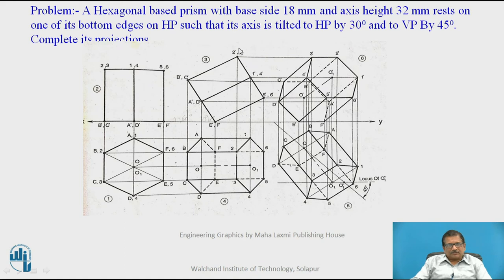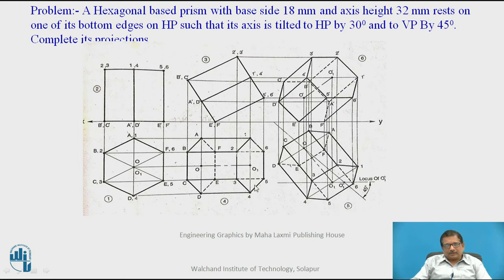Now for the top face: when we project points 1, 2, 3, 4, 5, 6 — points 2 and 3 are projected downwards and horizontally, giving points 2 and 3. Then point 1 is projected horizontally and vertically, giving point 1. Similarly on the same line, point 4 is obtained by projecting 4 horizontally and vertically. For points 5 and 6, they are projected horizontally, giving points 5 and 6.